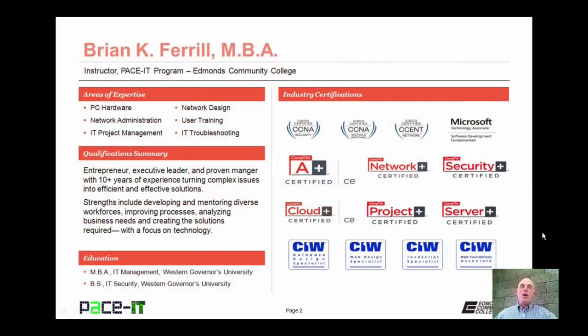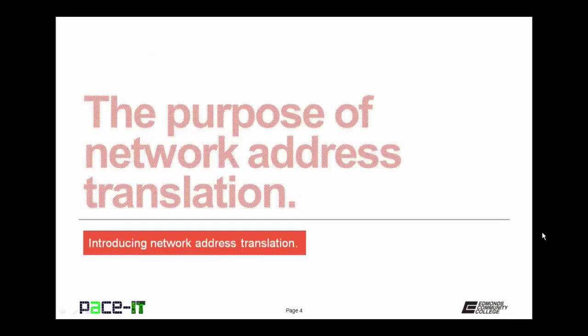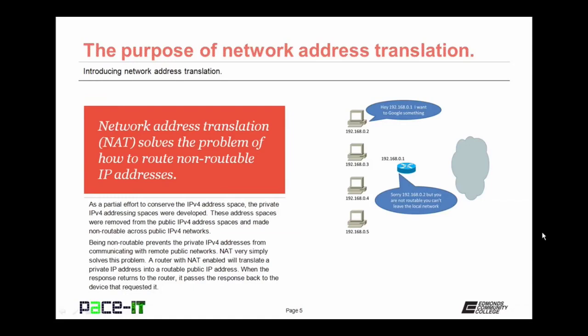Hello, I'm Brian Farrell, and welcome to PACE IT's session introducing Network Address Translation. Today we're going to be talking about the purpose of Network Address Translation and then discuss how it works. Network Address Translation — or NAT — solves a very serious problem of how to route non-routable IP addresses. As a partial effort to conserve the IPv4 address space, the private IPv4 addressing spaces were developed and removed from the public IPv4 address space, making them non-routable across public IPv4 networks.